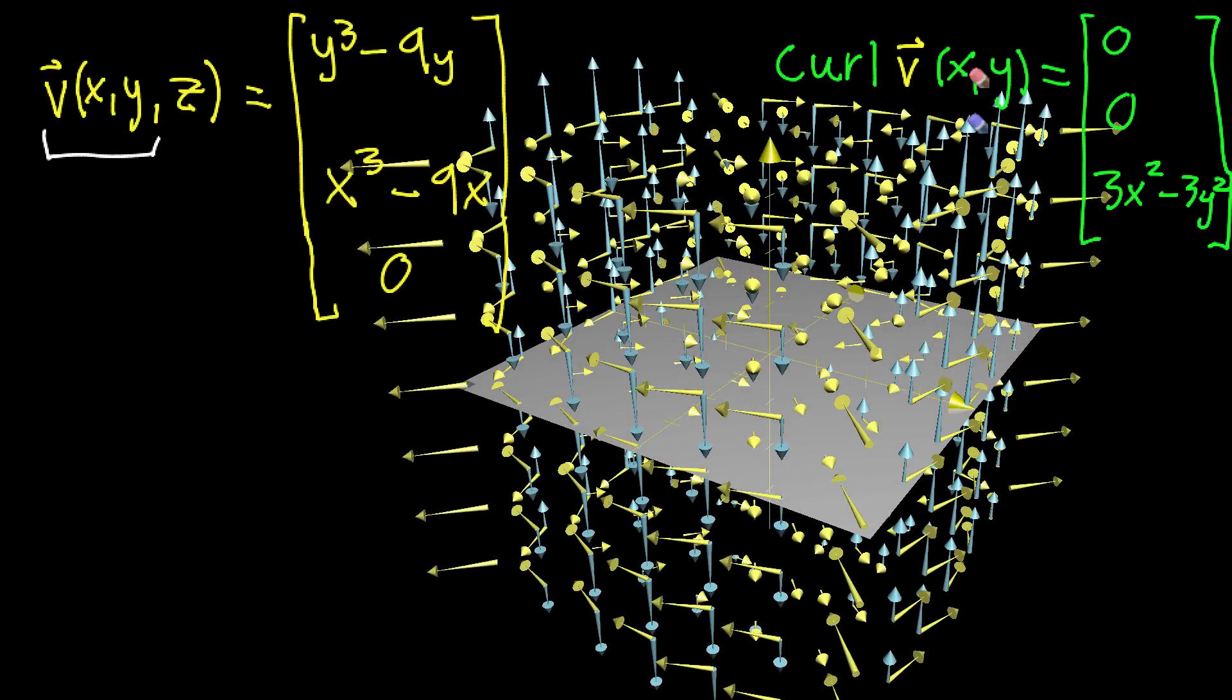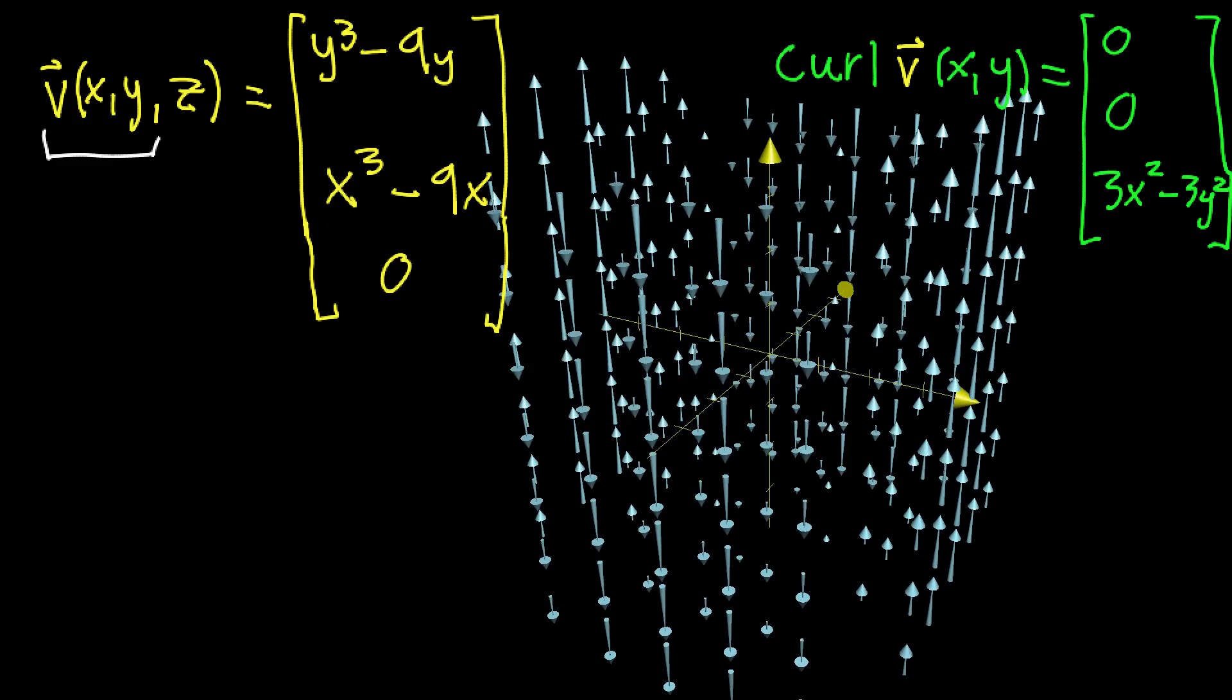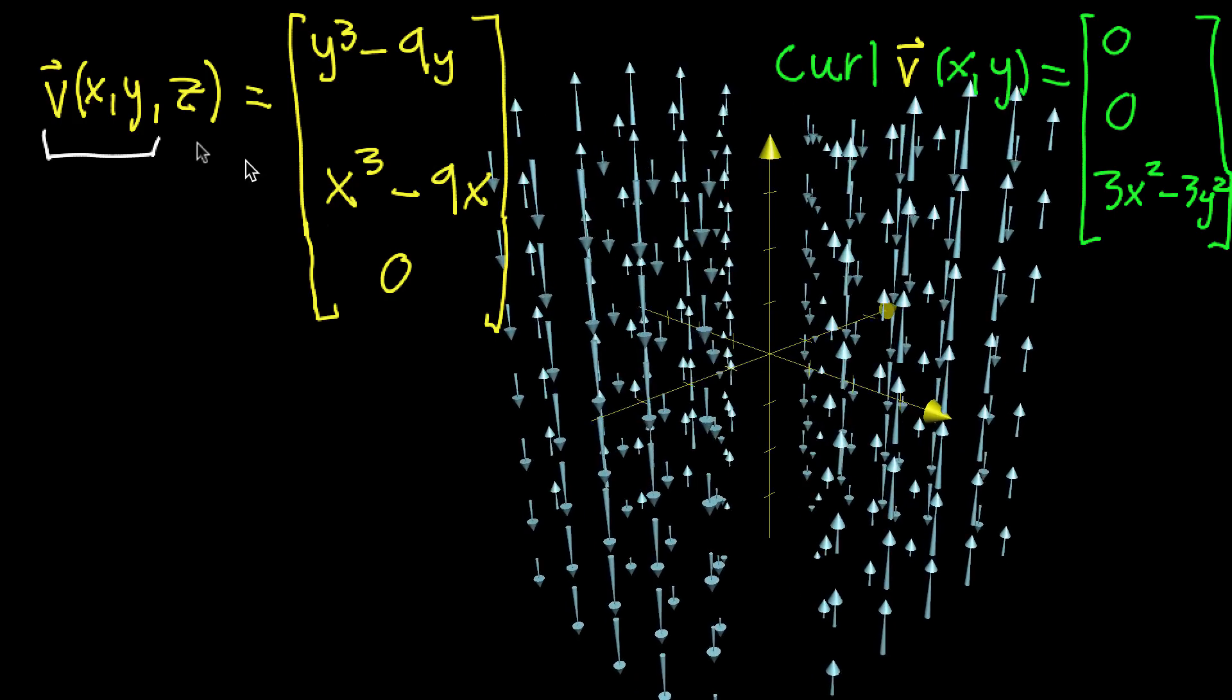And maybe this is kind of a mess, because there's a lot of things on the screen at this point. So for the moment, I'll kind of remove that original vector field and remove the xy plane, and just kind of focus on this new vector field that I have pictured here.